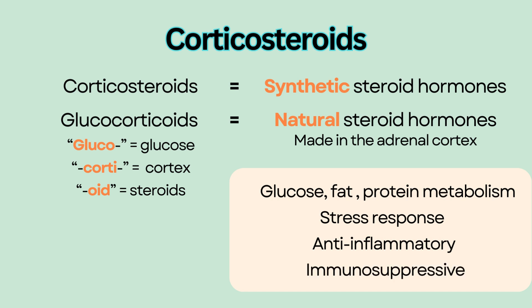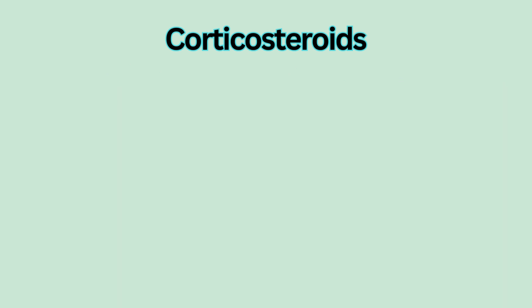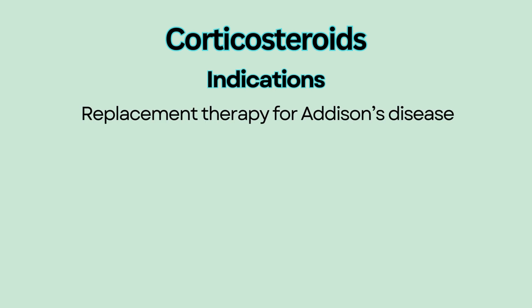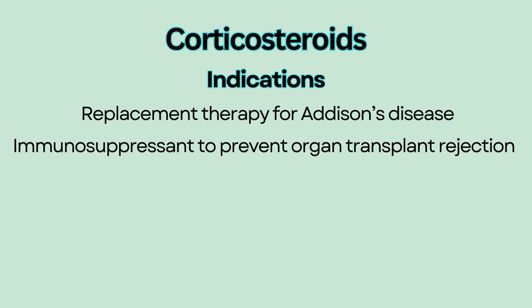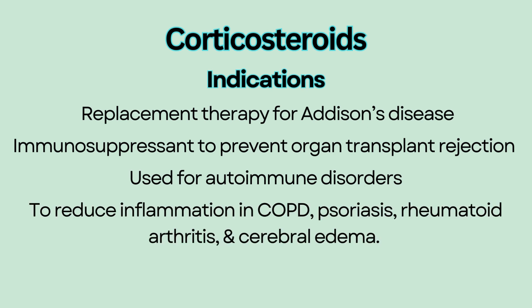Glucocorticoids also have stress response, anti-inflammatory, and immunosuppressive properties. The most well-known example is cortisol. Remember, glucocorticoids such as cortisol are produced by the body, while corticosteroids are synthetic steroids. Corticosteroids are used as replacement therapy in adrenal insufficiency or Addison's disease, as an immunosuppressant to prevent organ transplant rejection, to treat autoimmune disorders, and to reduce inflammation in conditions like COPD, psoriasis, rheumatoid arthritis, and cerebral edema.